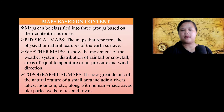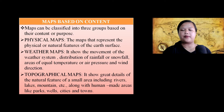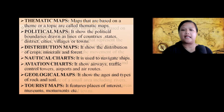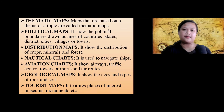Next is topographical maps. Topographical maps show great detail of the natural features of a small area, including rivers, lakes, mountains, etc. They also show human-made areas like parks, wells, cities, and towns. Next is thematic maps — maps that are based on a theme or a topic.